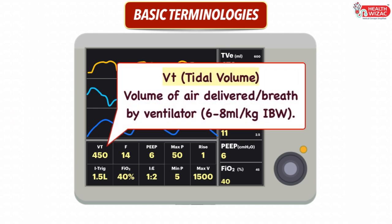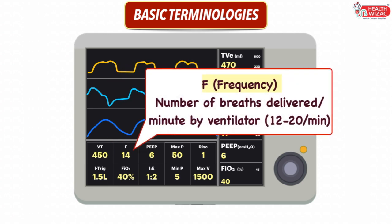First is VT, or tidal volume, which is the volume of air delivered per breath by the ventilator. It is usually set in the range of 6–8 ml per kg of ideal body weight of the patient. Next is frequency, which is the number of breaths delivered per minute by the ventilator, usually set in the range of 12–20 per minute.